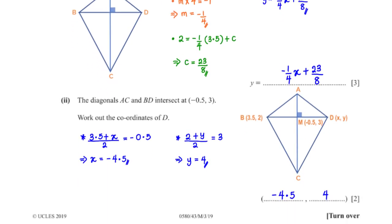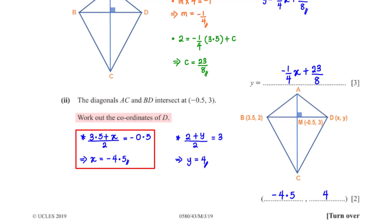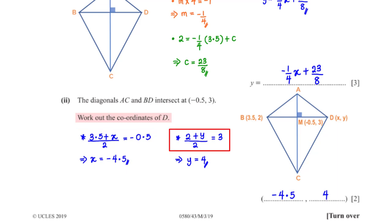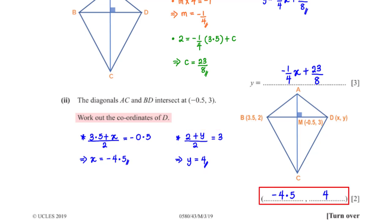The diagonals AC and BD intersect at (negative 0.5, 3). Work out the coordinate of D. The intersection point is the midpoint of BD. So (3.5 + x_D)/2 = negative 0.5, giving x_D = negative 4.5. And (2 + y_D)/2 = 3, giving y_D = 4. The coordinate of D is (negative 4.5, 4).